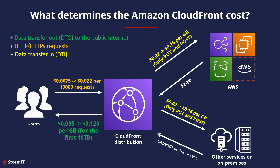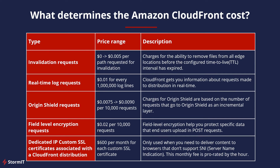PUT and POST requests from a CloudFront distribution to AWS services, any other service, or on-premises will cost you per gigabyte. So if a user uploads something to your service, you pay for every gigabyte of those files. There is also a charge for invalidation requests — you are charged for manually deleting data from CloudFront edge location POP caches.